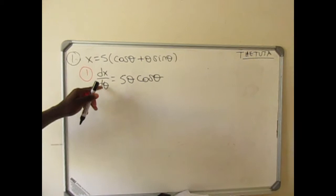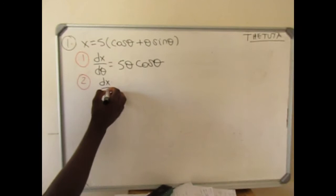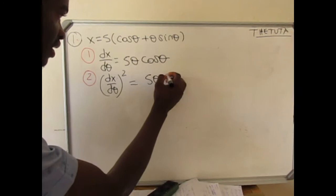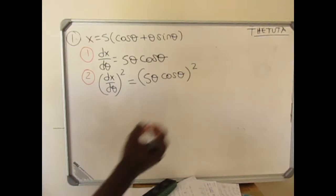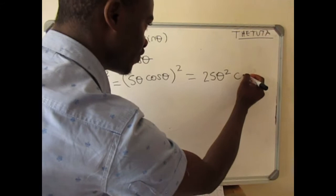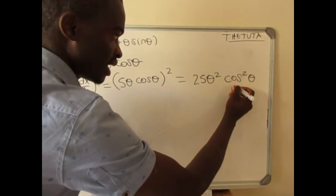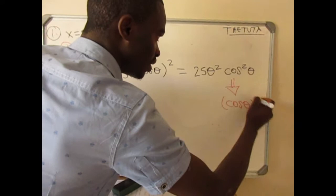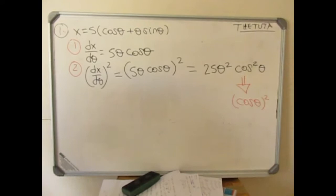Once you find your derivative, the second step is to look for the square of this derivative. So it's going to be (dx/dθ)². Therefore it's going to be (5θcosθ)², and when you work through it you're going to have 25 — because 5² is 25 — then θ squared, then cos²θ. This cos²θ is the same as writing (cosθ)². The two notations are similar. So already you have part of your formula ready to substitute into the arc length formula.